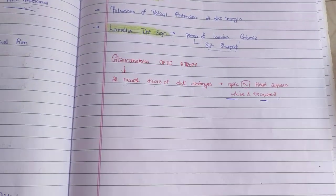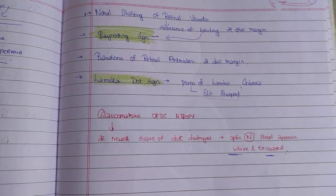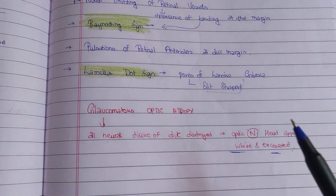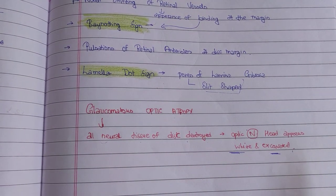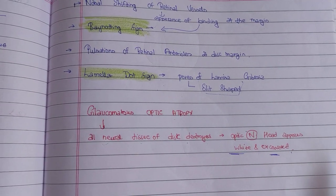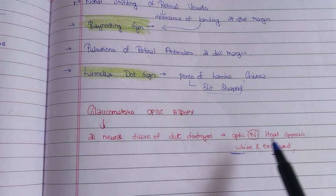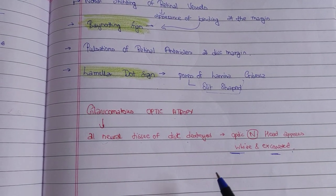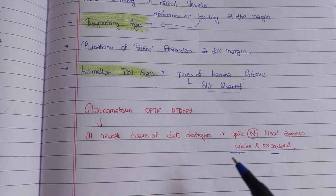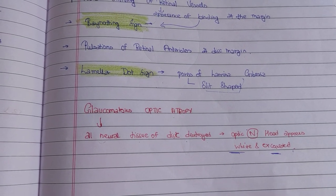So we have covered the signs and symptoms. In the next lecture — the second part — we will discuss the treatment and visual field defects. That's all for this lecture. If you find this helpful, please like, comment, share, and subscribe.